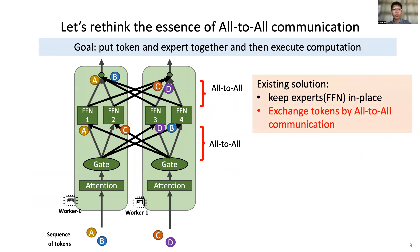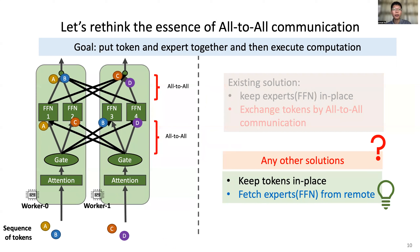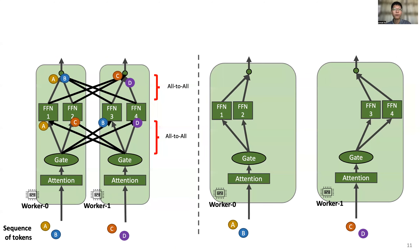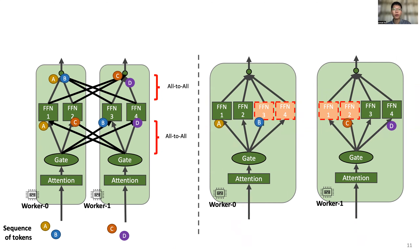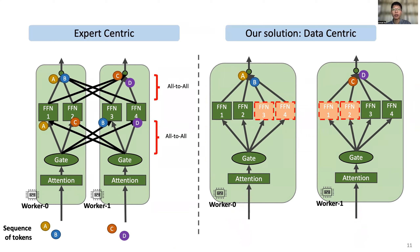To train MoE models in an efficient way, we rethink the essence of all-to-all communication. The goal of all-to-all communication is to put tokens and experts together and then execute computation. Existing solutions keep experts in place and exchange tokens by all-to-all communication. We propose that we can also keep tokens in place and fetch experts from remote. In our solution, the feed-forward networks are exchanged between workers. After the required experts are fetched to the local GPU, the token can be directly executed in the local GPU and get results. We name the existing solution as expert-centric and our solution as data-centric. If the size of experts is much smaller than the size of tokens, data-centric is more efficient than expert-centric.